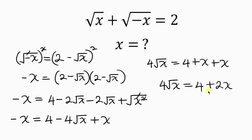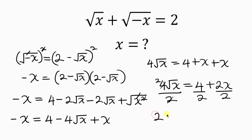Simplifying further we have 4 root x equal to 4 plus 2x. Now let's reduce this because 2 can divide through. So dividing through by 2: 4 divided by 2 is 2, so we get 2 root x equal to 2 plus x.